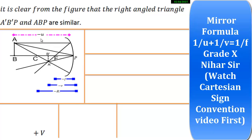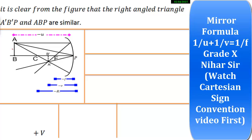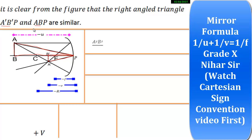Now we have to take two similar triangles. Triangle A'B'P and triangle ABP — these two triangles are similar. You need to make the similarity ratio from this. According to the similarity rule, A'B' upon AB equals B'P upon BP.